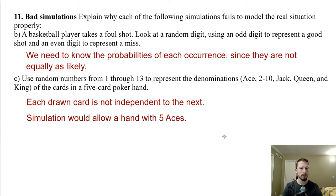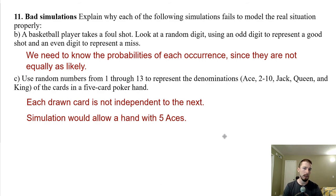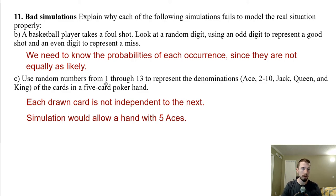Number 11B: a basketball player takes a foul shot. Use an odd digit to represent a good shot and an even digit to represent a miss. There are an equal number of odds and evens, so we're assuming a 50/50 chance of hitting a foul shot — but for each player, that's not true. Maybe for Shaq it might be 50/50, but most players are going to be much better than that. We would need to know the probability for each specific player.